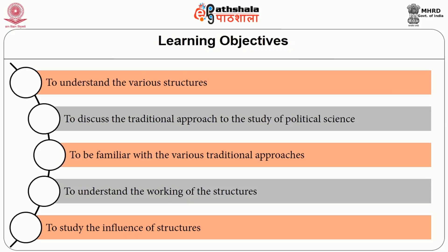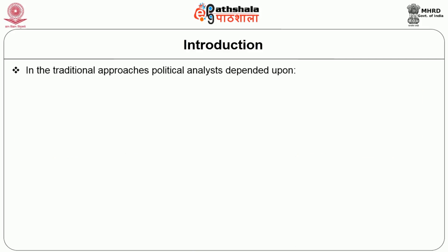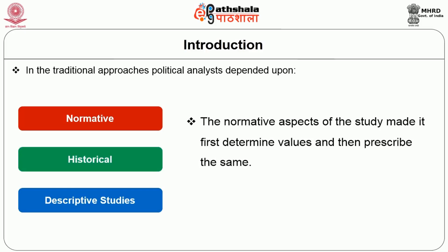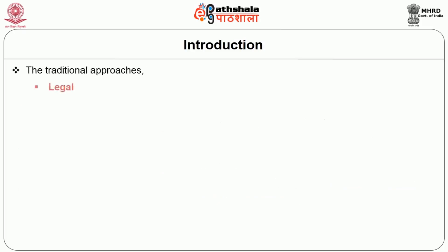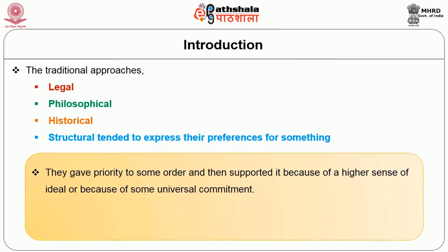The objectives also include understanding the working of the structures and studying the influence of structures. The approach of comparative politics prior to the Second World War is generally known as the traditional approach. In the traditional approaches, political analysts depended upon normative, historical and descriptive studies. The normative aspects first determined values and then prescribed them — the form of value was what ought to be rather than what is. The traditional approaches, be they legal, philosophical, historical or structural, tended to express preferences for something, giving priority to some order and supporting it because of a higher sense of ideal or universal commitment.